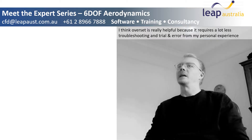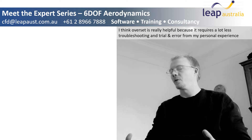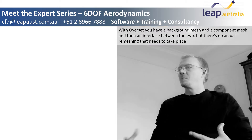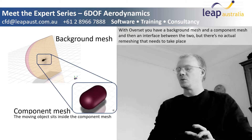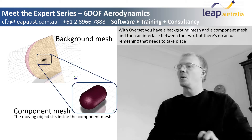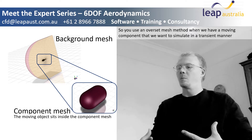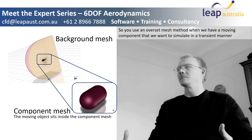I think Overset is really helpful because it requires a lot less troubleshooting and trial and error from my personal experience. With Overset you have a background mesh and a component mesh and then an interface between the two, but there's no actual remeshing that needs to take place. So you use an Overset mesh method when we have a moving component that we want to simulate in a transient manner.